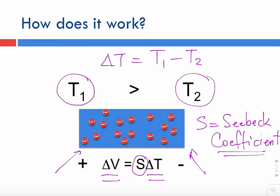In a semiconductor, the Seebeck coefficient is determined by a number of things, such as the band structure and also the doping density in the material.